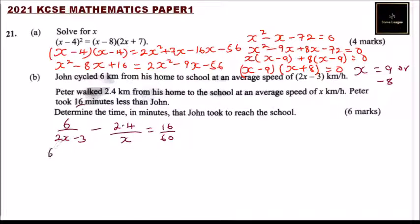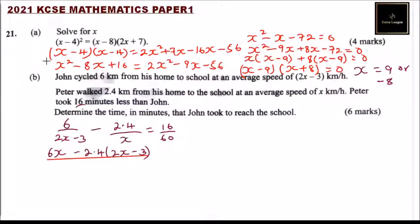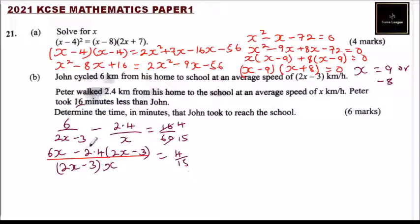Cross-multiplying, we get 6x minus 2.4(2x minus 3) over x(2x minus 3), all equal to 4 over 15. Simplifying the numerator: 6x minus 4.8x gives 1.2x, plus 7.2. So we have (1.2x plus 7.2) over x(2x minus 3) equals 4 over 15.